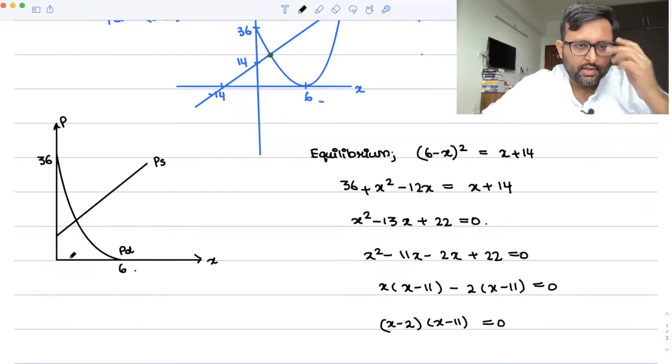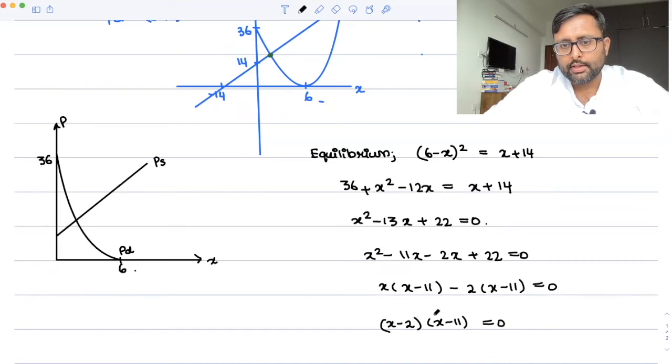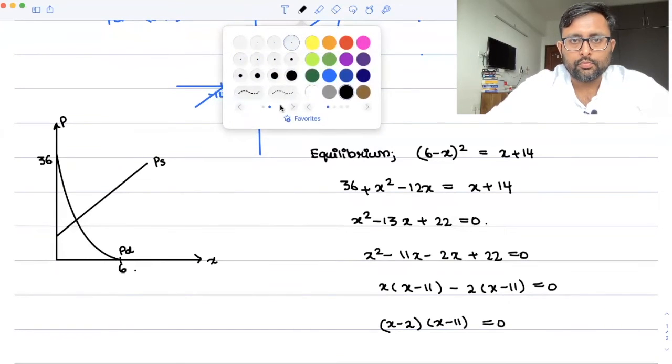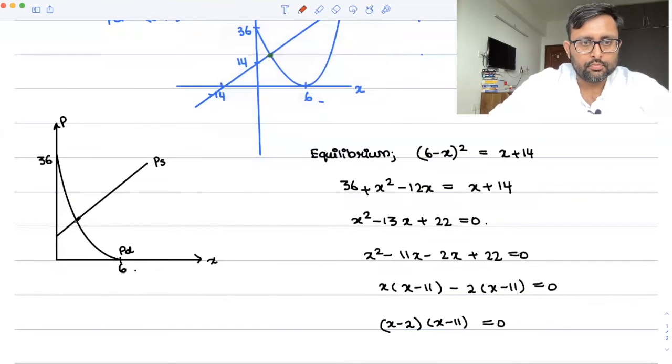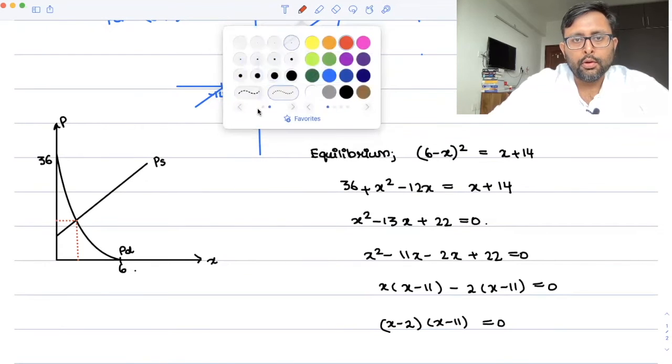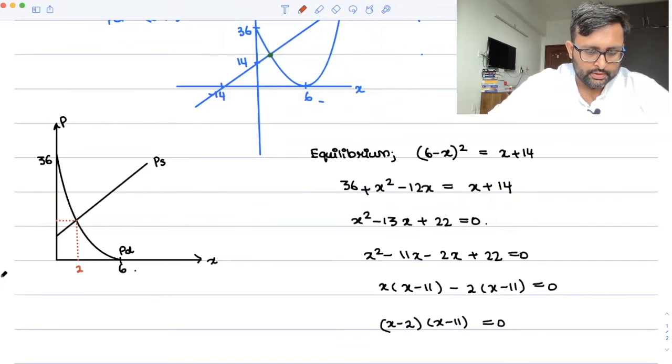So I guess we won't be considering x equals to 11 because our demand function falls here. I mean, it becomes 0 out here at this time. So we'll be only considering x equals to 2.